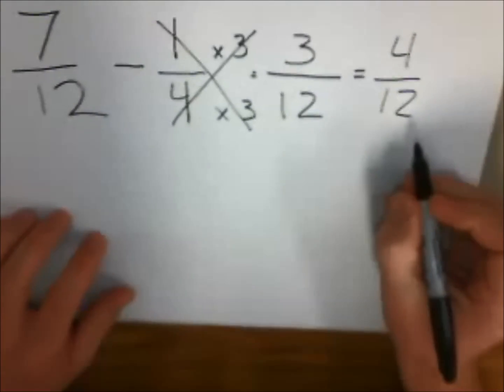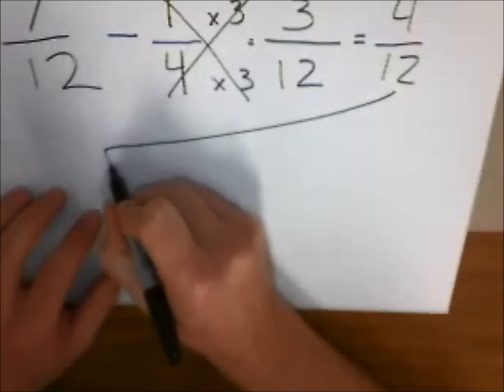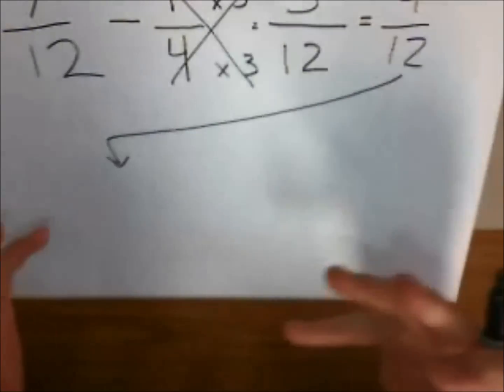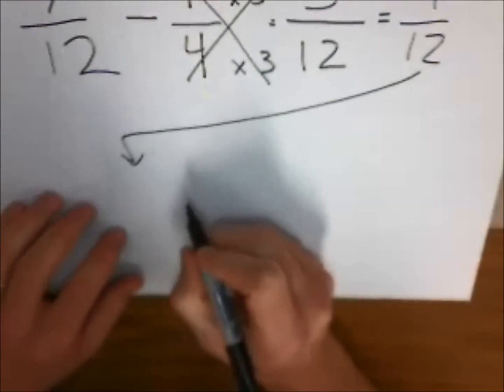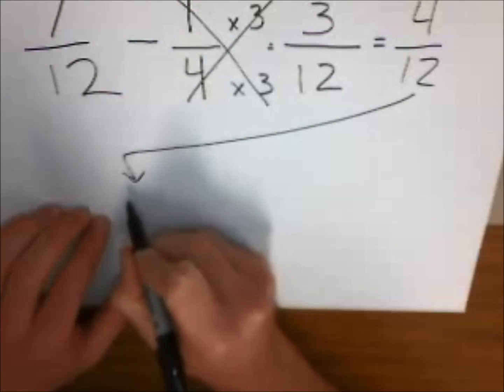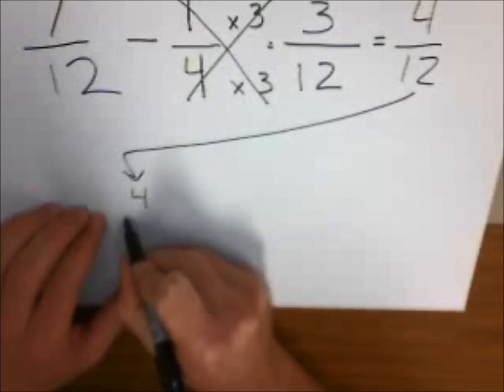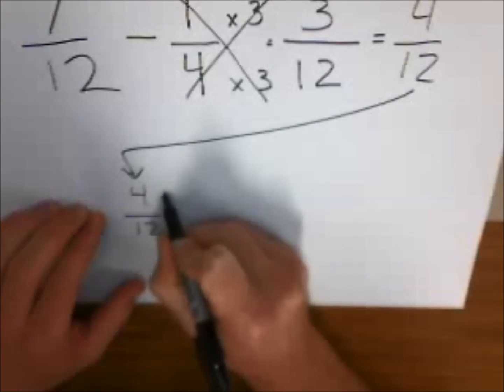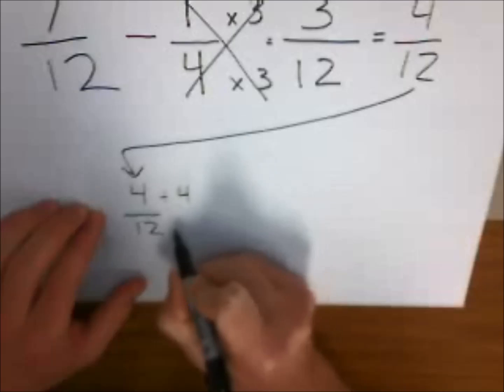That's good and all, but there's something that we know in fifth grade: we can make 4/12 a little bit smaller. We know that 4 goes into 4 and 4 goes into 12, so we're going to take our 4/12 and divide that by our divisor.